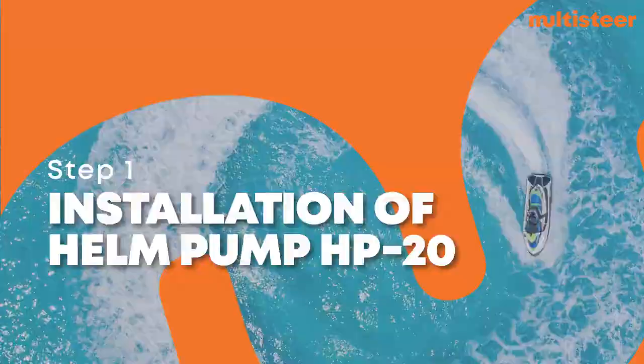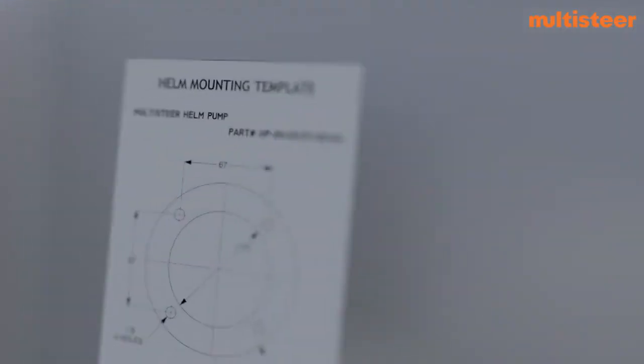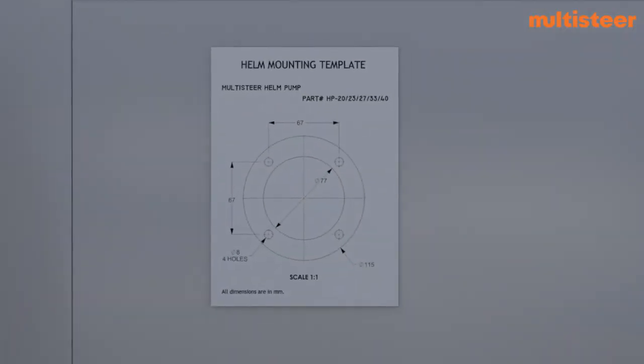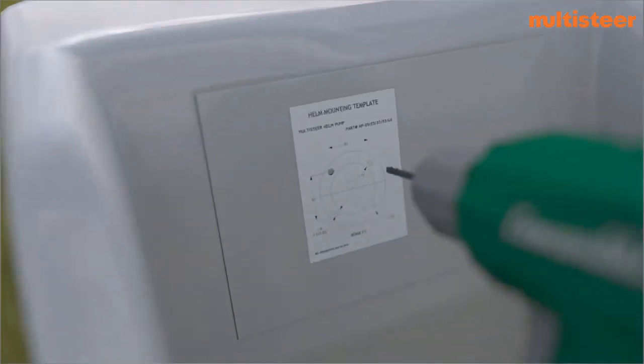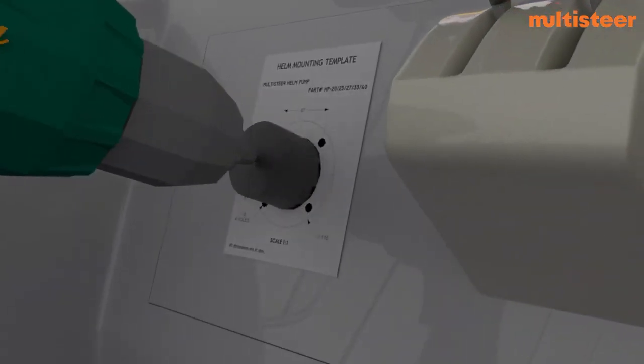Installation of helm. Place the helm mounting template supplied with the installation manual on the dashboard where the helm is to be mounted. Drill four small holes and one big hole in the center as for the template.